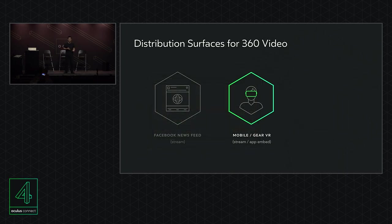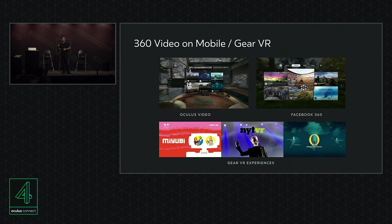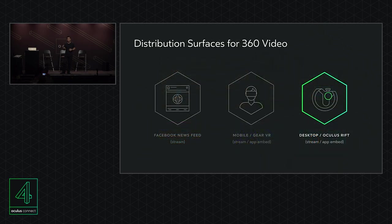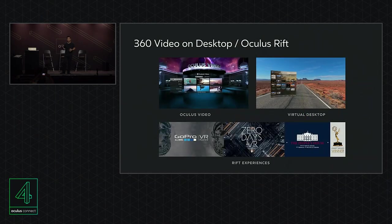360 video really comes alive in headset. 360 content is popular in mobile headsets like Gear VR. Oculus Video is a Gear VR experience full of curated 360 video content. The Facebook 360 app is feed-based and pulls 360 content from the greater Facebook video ecosystem. 360 video can also be embedded for local playback in bespoke VR experiences — MiYubi is a great example of this by Felix and Paul. Apps like the New York Times VR app are collections of all of their 360 video work. 360 also exists in desktop VR experiences via the Oculus Rift, which similarly supports local 360 media stored on your file system.